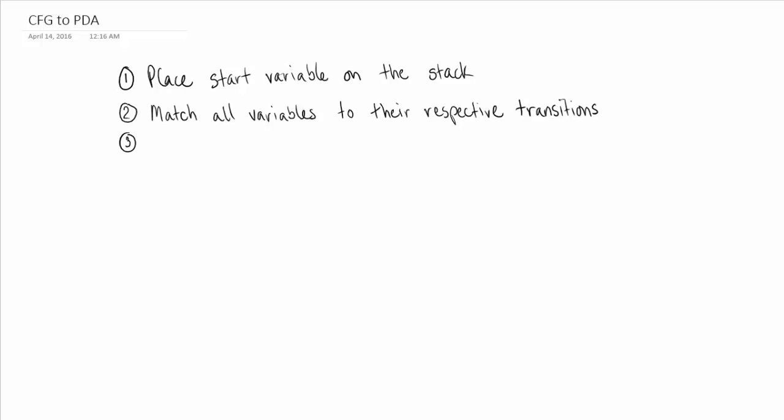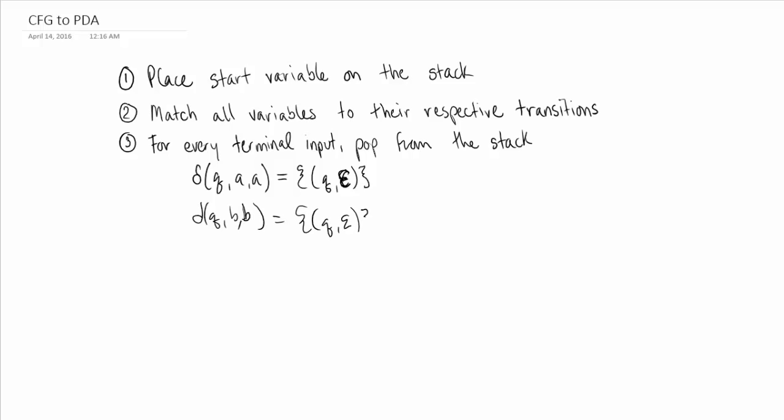And for every terminal A, we want to pop it from the stack essentially. So I'll add a little example of number 3 here. You do this for every single terminal. So if you have a terminal B, you do the same thing for B. So that would be Q, B, B, and then the exact same thing. You're just popping from the stack.